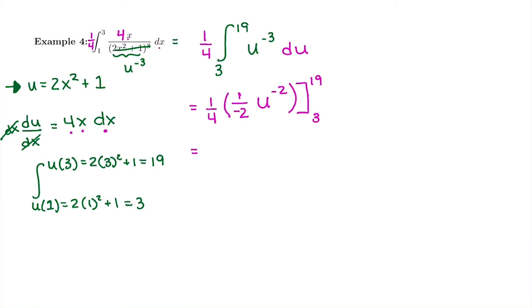And I'm going to multiply these fractions together. In the top, 1 times 1 is 1. In the bottom, 4 times negative 2 is negative 8. The fundamental theorem says plug in your upper bound minus plugging in your lower bound. So I'm going to replace u with 19 raised to the negative 2, and then 3 raised to the negative 2.